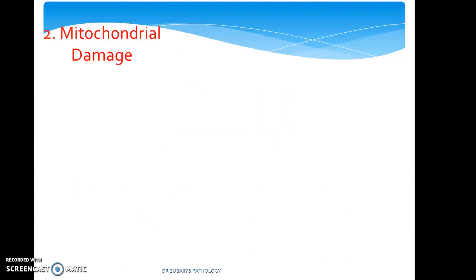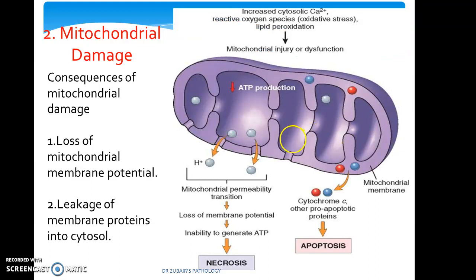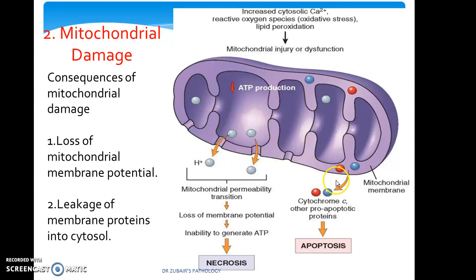The second mechanism is mitochondrial damage, resulting from loss of mitochondrial membrane potential and leakage of membrane proteins into the cytosol. When the mitochondrial membrane potential is lost, the function of mitochondria to produce ATP is hampered, resulting in necrosis. Secondly, there is escape of cytochrome C, and this cytochrome C escape leads to apoptosis.